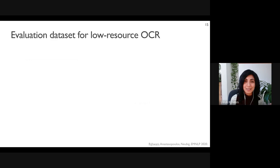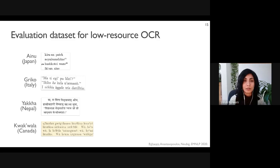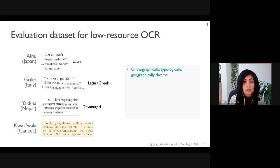The evaluation dataset we created contains manually transcribed documents in four languages: a book of epic poetry in Ainu, a book of folk tales in the Greco language of southern Italy, three children's story books in the Yakha language of Nepal, and linguistic documentation in the Kwakwala language of Canada. These languages are orthographically diverse — Ainu uses the Latin script, Greco uses a combination of Greek and Latin scripts, Yakha uses the Devanagari script, and Kwakwala has a unique orthography called the Boas writing system.